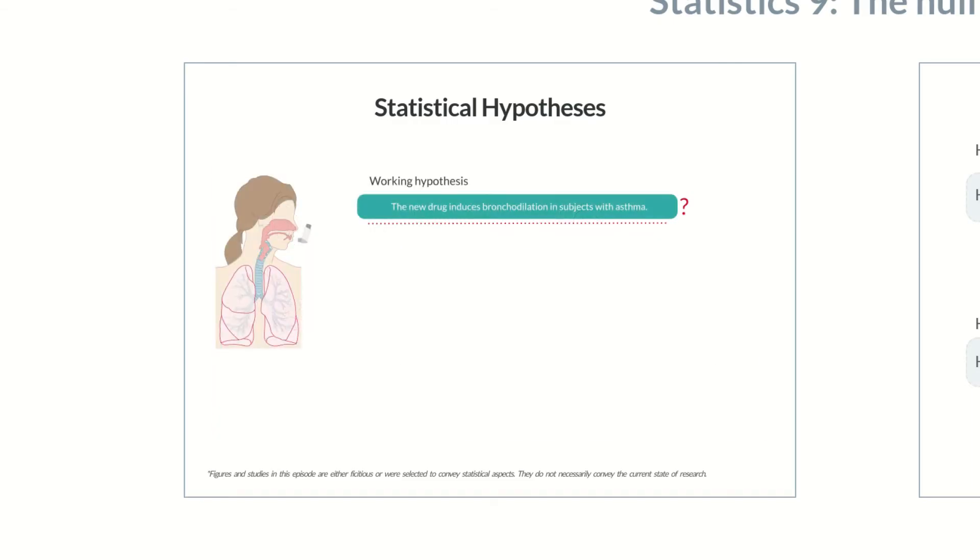Now, the working hypothesis can be formulated more specifically. In test subjects with asthma, the amount of air expired in one second changes 30 minutes after administration of the drug. With this alternative hypothesis, we have an assumption of what to observe in the study and what outcome to expect.